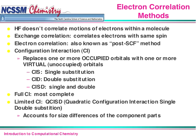The CI variants include CIS (single substitution), CID (double substitution), CISD (single and double substitution), full CI (almost a complete analysis using the CI method), and limited CI such as QCISD — quadratic configuration interaction, single and double substitution. We have some work cut out for us over the next couple of weeks to get our heads around all these, and we will get there. This is just a beginning introduction to what's coming.